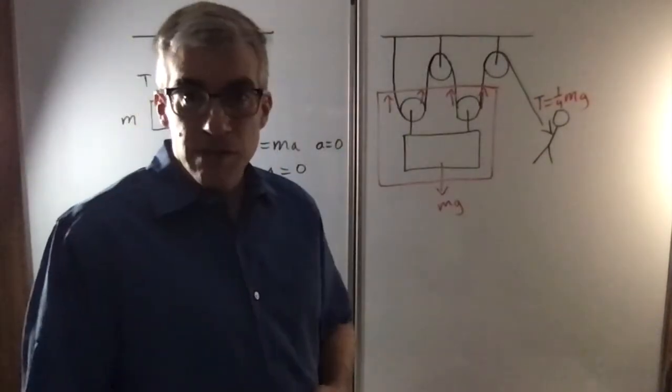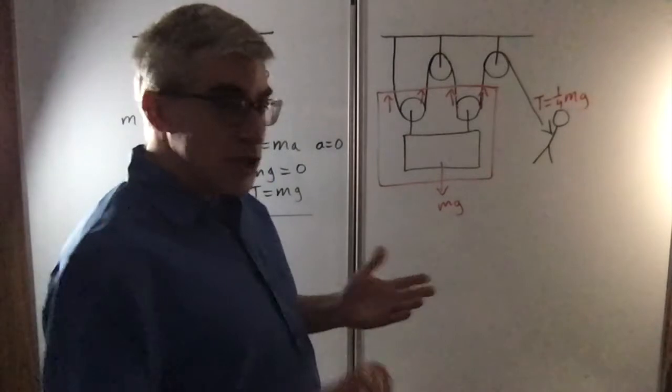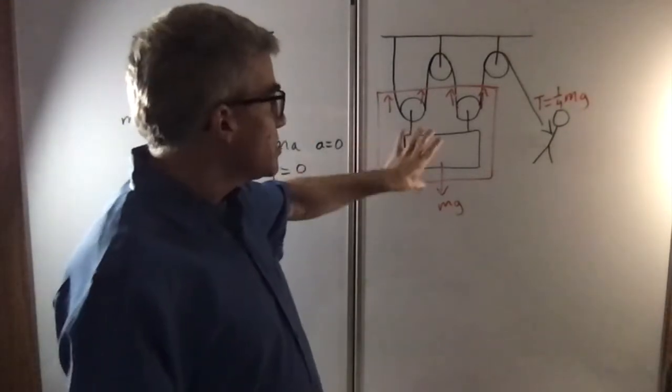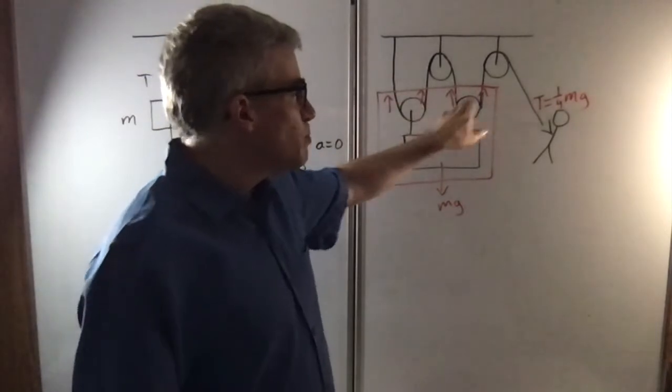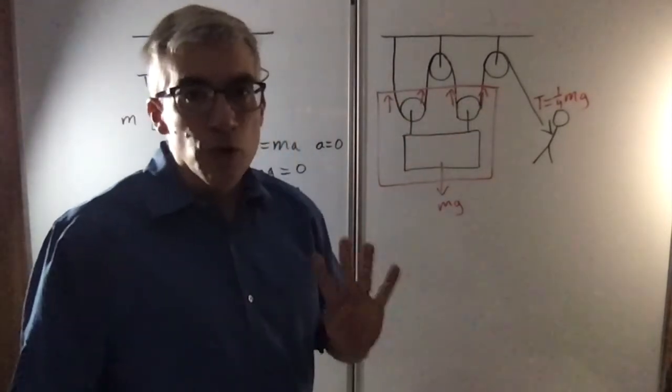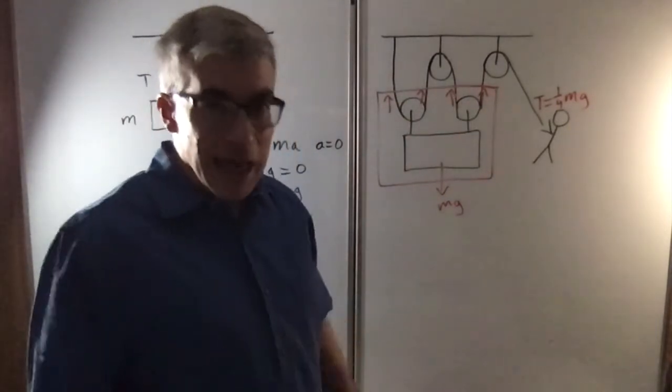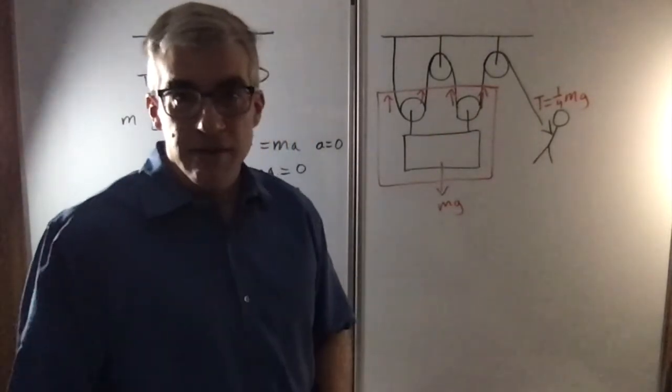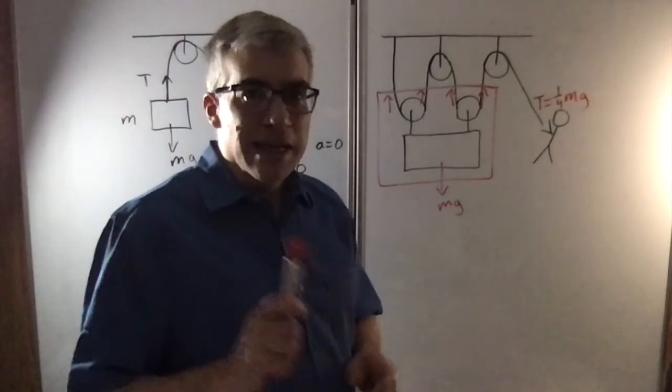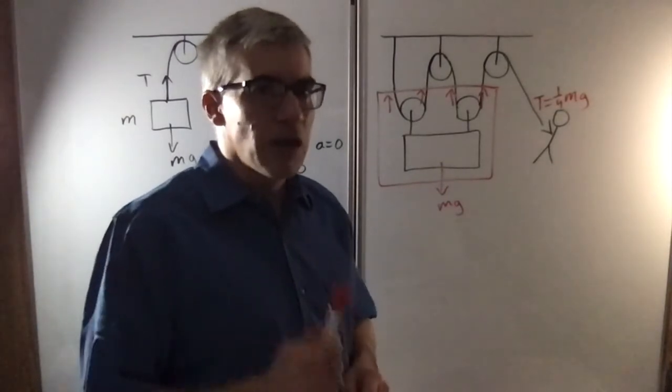So here we have four pulleys. The mechanical advantage, is it four? Yes, because what you do is you take the object and you count how many ropes are lifting it. There are four ropes lifting it, and so you have a mechanical advantage of four. You only have to pull with one-fourth MG. So that's the key idea, count how many ropes are pulling on the object.